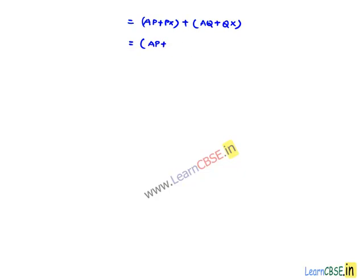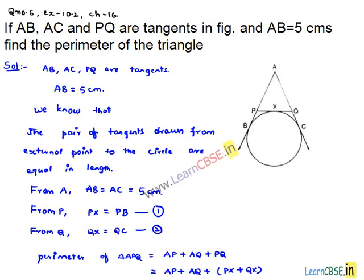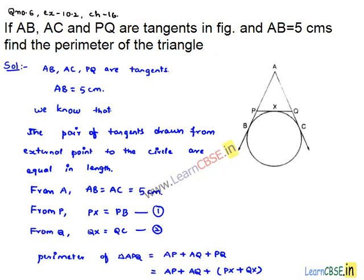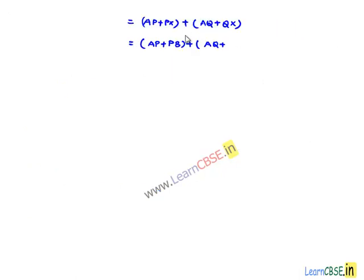Substituting from equation 1, we can write PX as PB. And from equation 2, we can write QX as QC. This gives us (AP plus PB) plus (AQ plus QC).